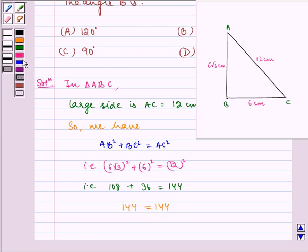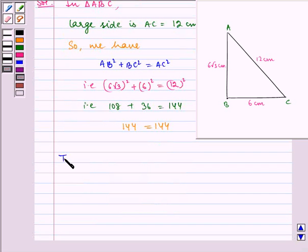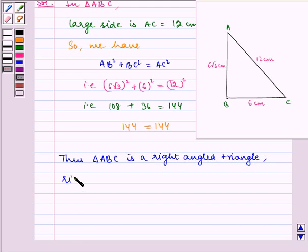Thus, triangle ABC is a right angled triangle. Right angle at B.